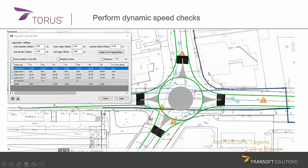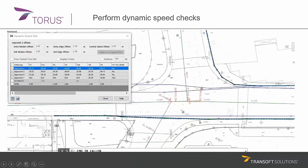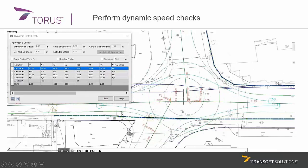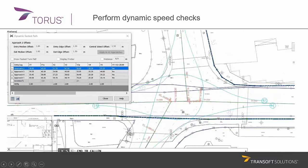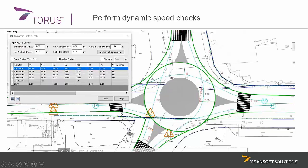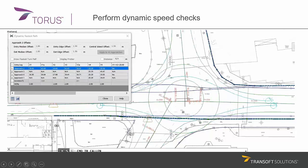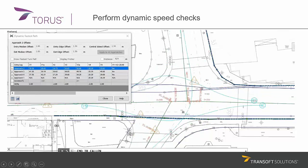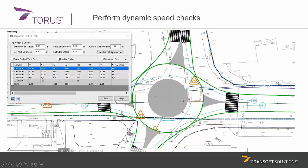In Taurus, once you have your design set up, you can also do some speed checks, which are dynamic. As you move the central island location, it's not only the roundabout geometry which is updated continuously, but if you focus on this dialog box on the left-hand side, you'll see that the speeds measured for every approach are also dynamically updated.